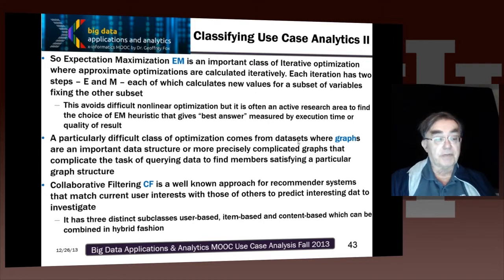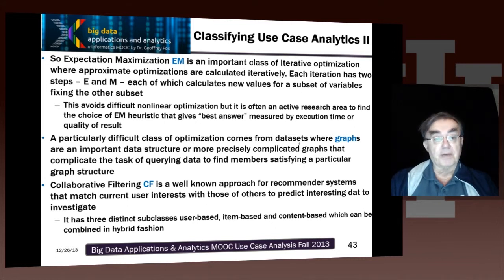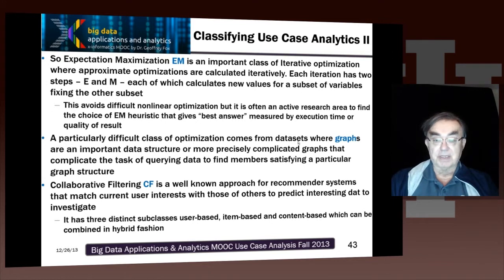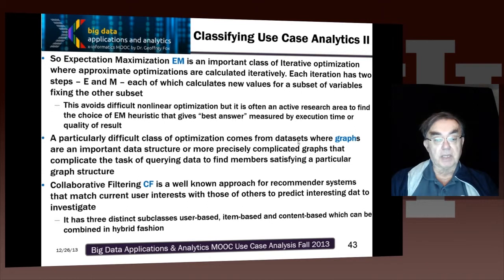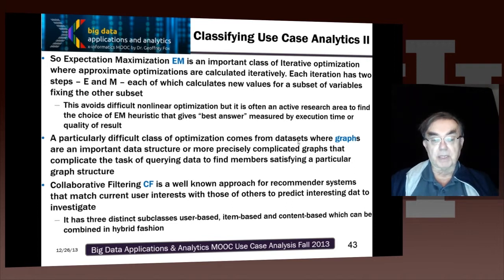Graph processing is particularly important because processing graphs is tricky — many methods used for non-graph algorithms don't work well due to very irregular and difficult-to-predict structure, making the whole calculation much harder. Collaborative filtering is possibly one of the most important algorithms ever invented, remarkably successful when used in Netflix, Amazon, and similar places. It's an approach for matching interests of one user with other users to recommend what data to investigate. There are three subclasses: user-based, item-based, and content-based — with hybrid combinations of them.